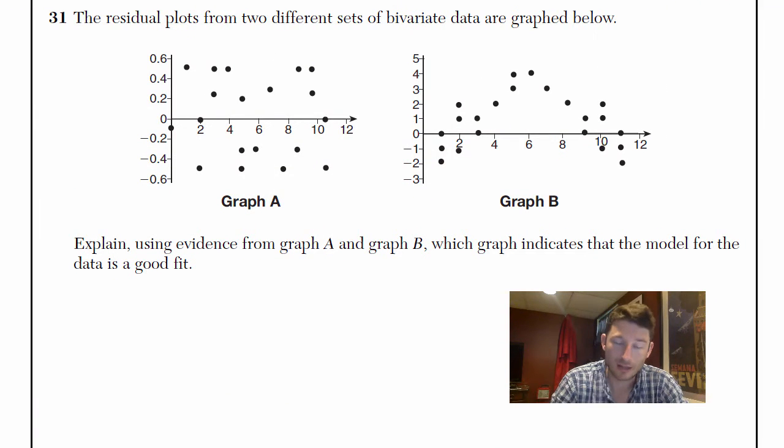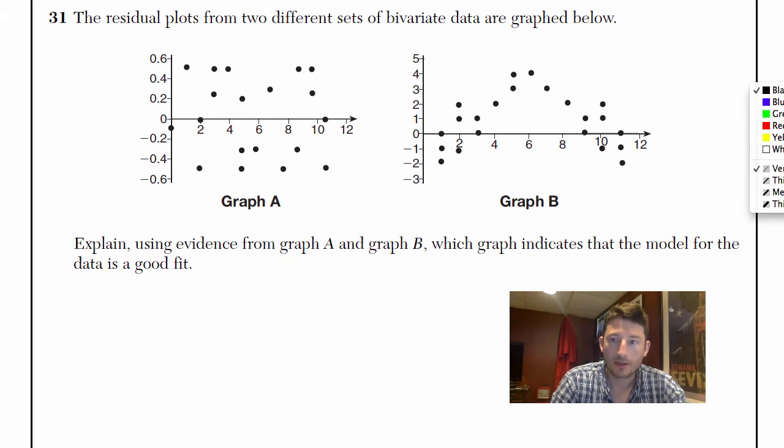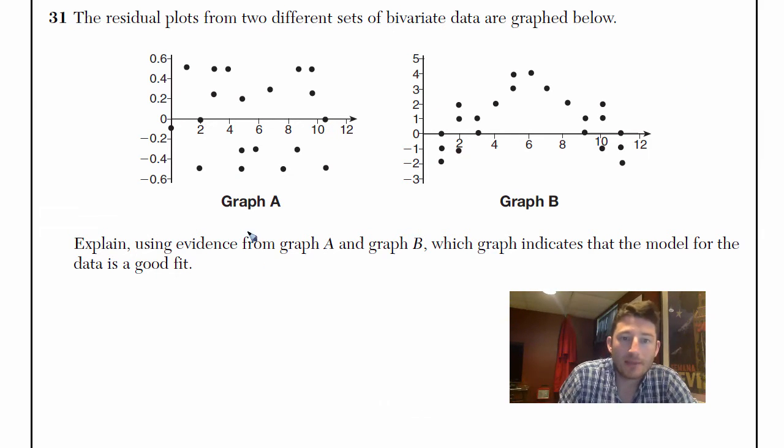So I'm going to show you the answers from the actual Regents that got the most points. Let's take a look here. Well, first of all, before I show you that, Graph A has points that are nicely interspersed or separated on either side of the line.